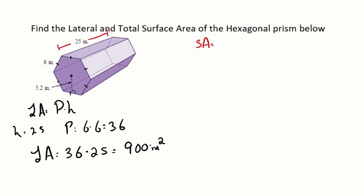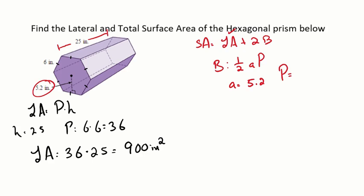For total surface area: lateral area plus two times the base area. The base is a hexagon, so we use the area of a regular polygon formula: one half the apothem times the perimeter. The lateral area is 900. The apothem is 5.2 and the perimeter is 36 inches. Plugging in: one half times 5.2 times 36 gives a base area of 93.6 inches squared.